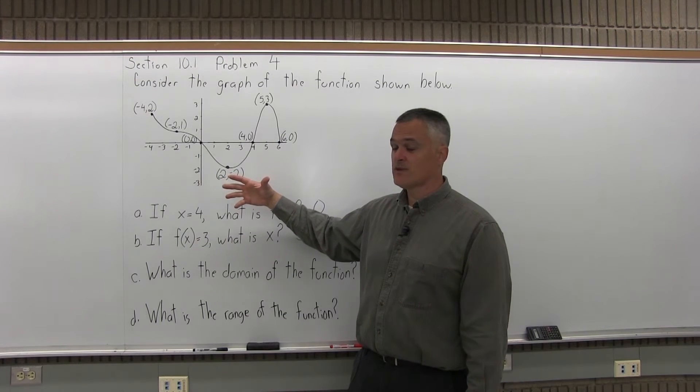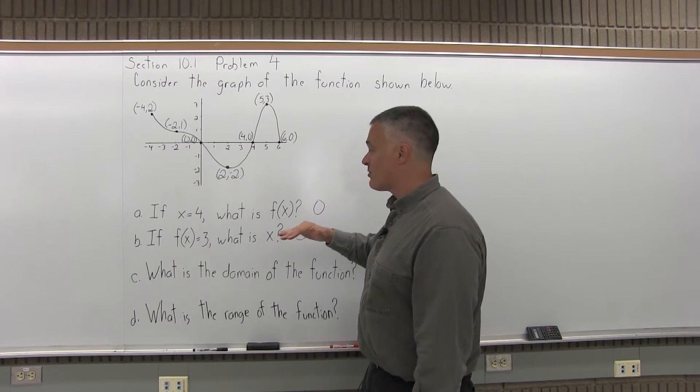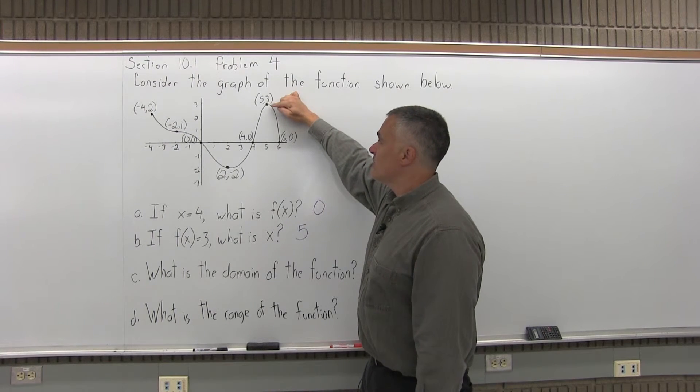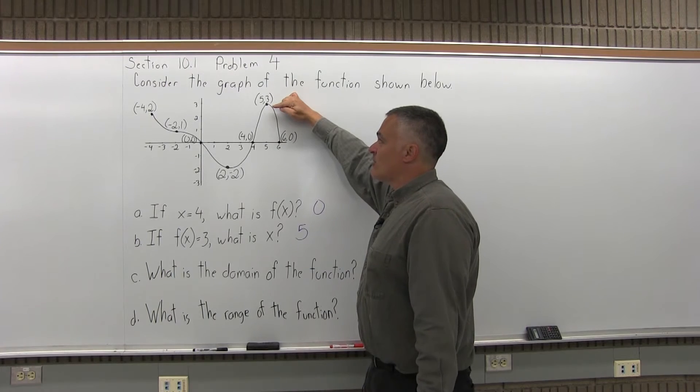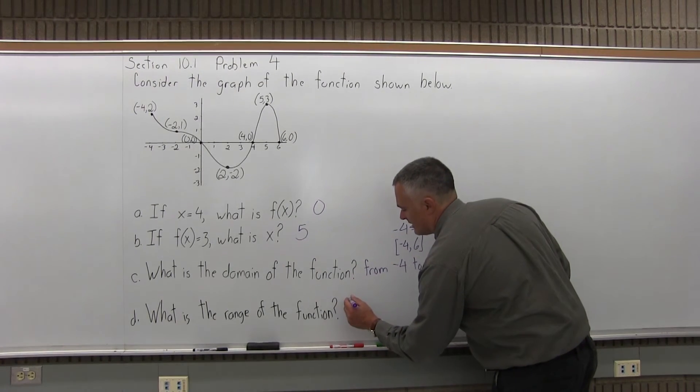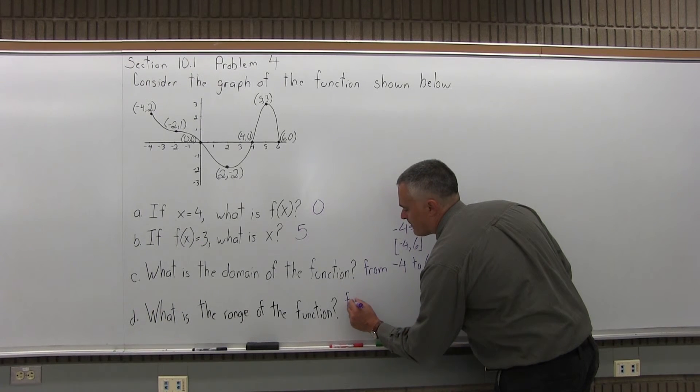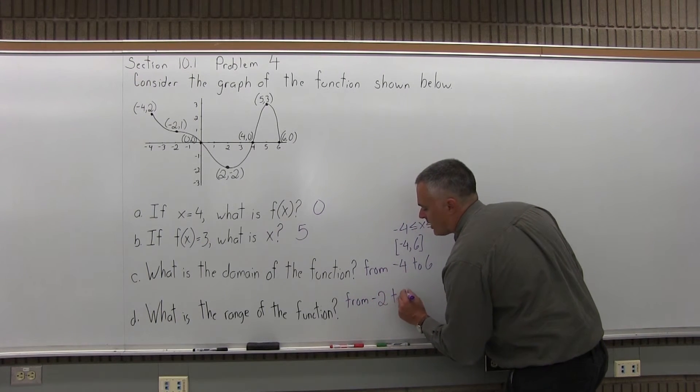So it has a y-coordinate of negative 2. That's the lowest y-coordinate you can get, or the lowest output you can get. And the highest point on the graph is labeled 5, comma, 3. So the highest output you can get is positive 3. So the range, or what you can get as an output, is from negative 2 to positive 3.